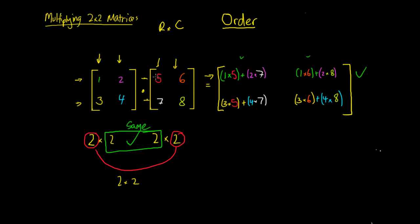So to summarise: we had 1 times 5, then added 2 times 7. Then 1 times 6, added 2 times 8 — that gave us our top-right term. Then 3 times 5, added 4 times 7. Then 3 times 6, added 4 times 8. We've got all these terms, and what we can do is draw up a set of brackets and simplify this down into a much easier form.